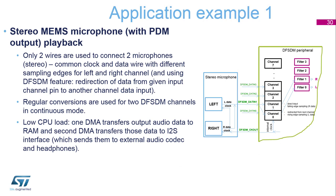The STM32-L4 evaluation board can be used to run two simple application examples to explore the digital filter for Sigma Delta modulator interface. The first example demonstrates MEMS microphones directly connected to the DFSDM peripheral. Data from the microphone are processed by DFSDM with proper filter settings and then collected in a memory buffer using regular continuous conversion and DMA. The recorded data from the microphone are then immediately sent by another DMA channel from this buffer to the I2S peripheral and played through headphones.